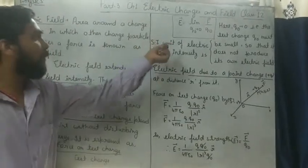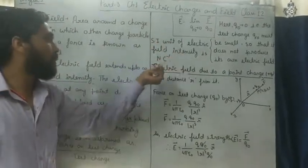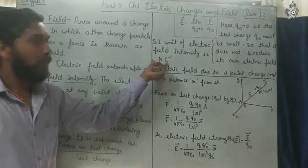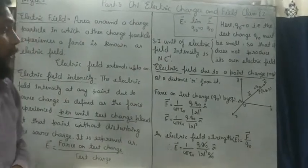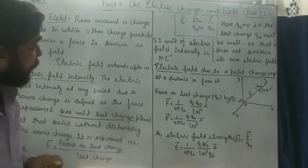The SI unit of electric field intensity is Newton per Coulomb. The direction of the electric field is always in the direction of the force.